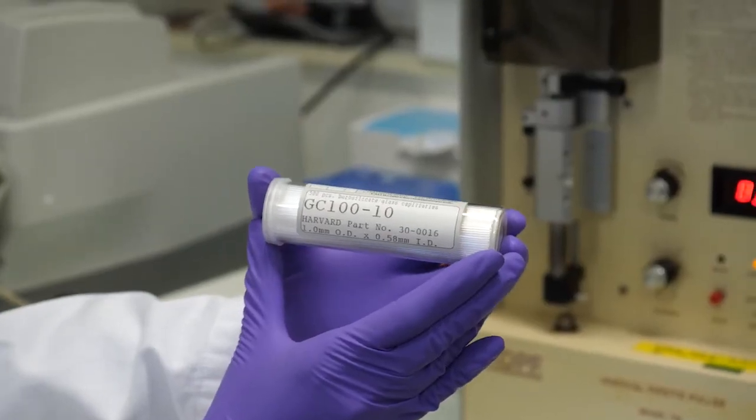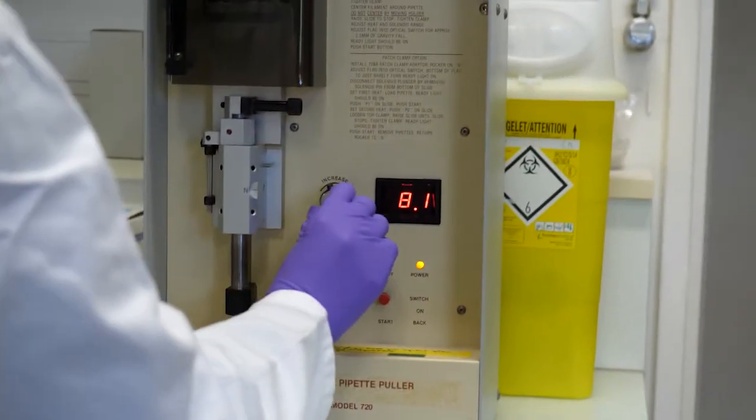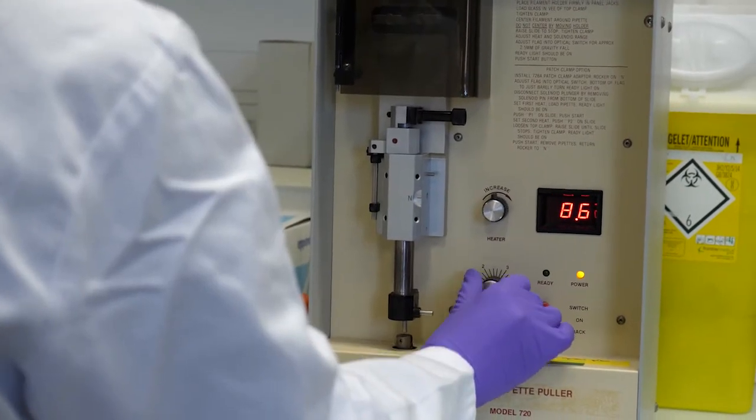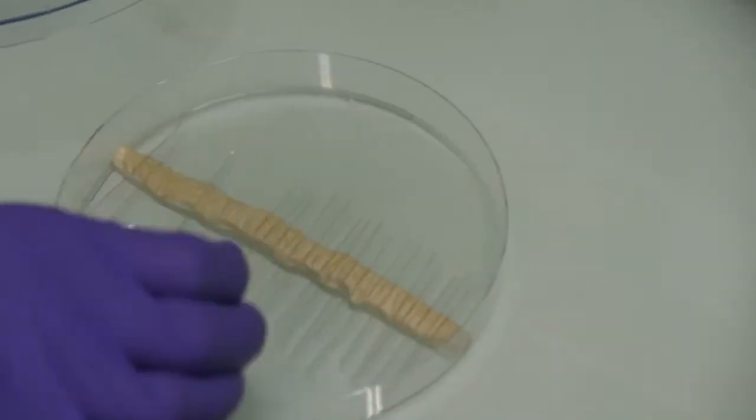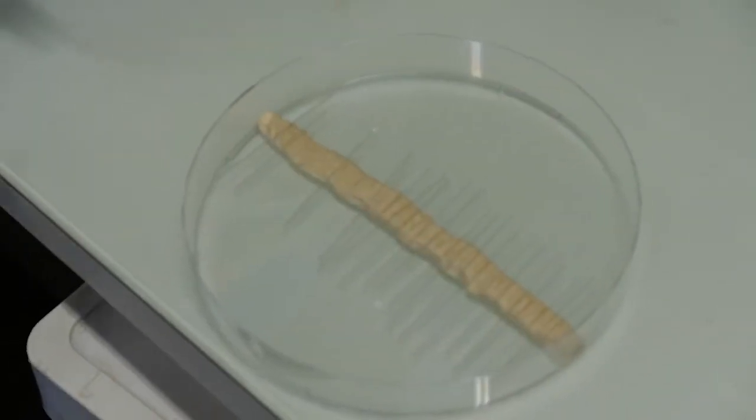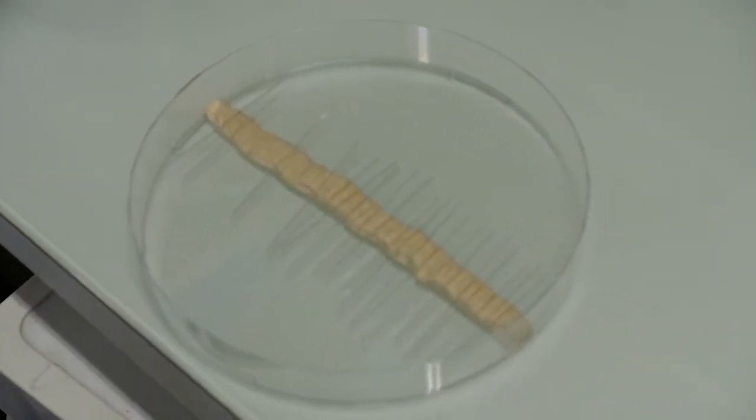A glass capillary is pulled on a vertical pipette puller. Parameters such as heat intensity and pulling force must be adjusted to get a needle with a narrow extremity with internal diameter of 1 nanometer. Needles are stored in a box by sticking them on modeling clay to prevent tip breakage and dust contamination.